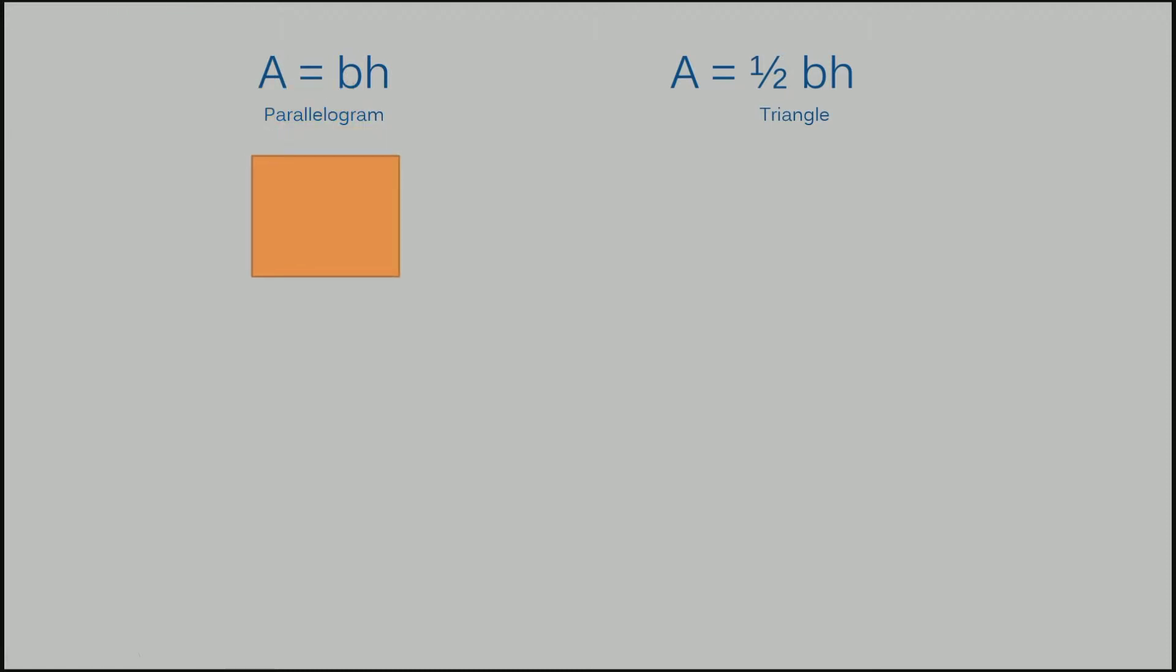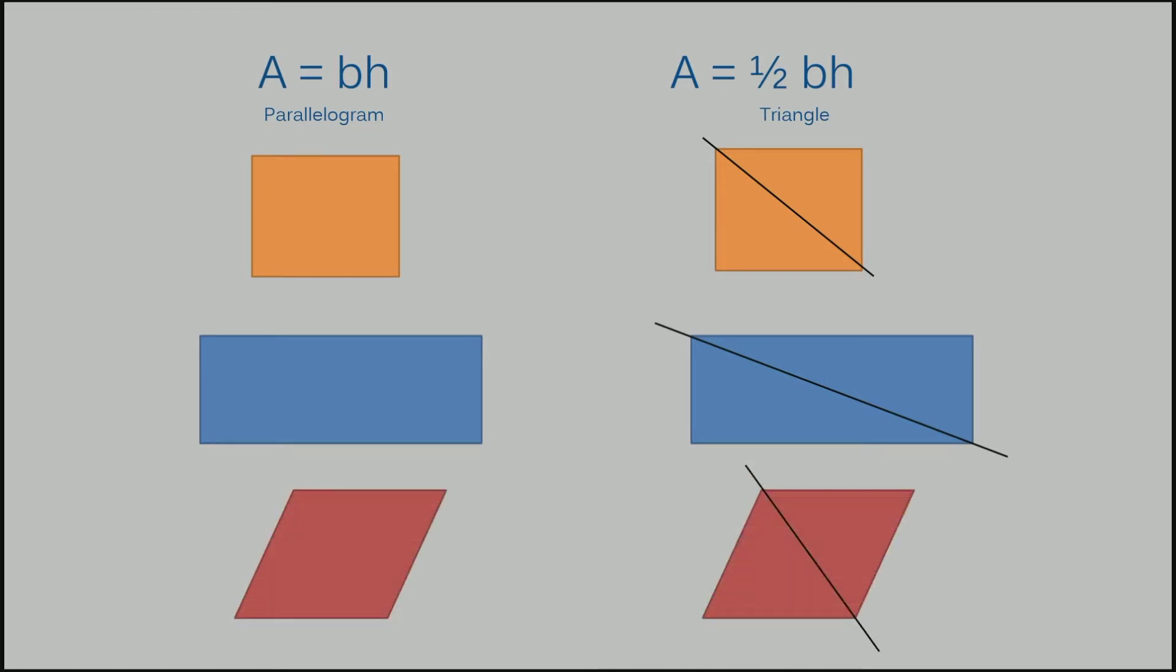When you find the area of a parallelogram you're multiplying the base and the height. A triangle is exactly half of that. Anytime I have a parallelogram, let's take this square for instance, and I cut it in half diagonally, you're going to see that I'm left with two triangles. So if I were to take the area that I got for the parallelogram and just split it in half, I'm going to get the value of a triangle. It works for any parallelogram. When I cut the rectangle in half diagonally, I'm going to get a triangle again.